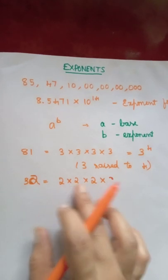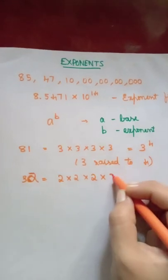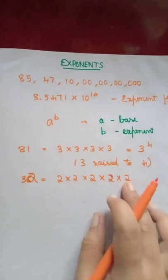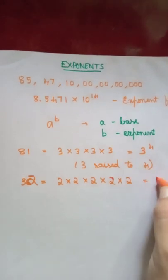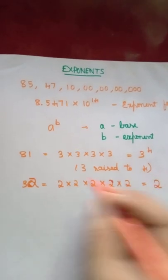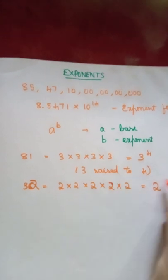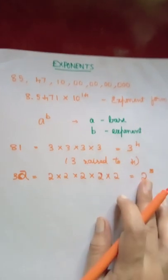8 into 2 is 16, 16 into 2 is 32. Now you have multiplied here 2, so 2 is the base. You have multiplied it 5 times so 5 is the exponent.